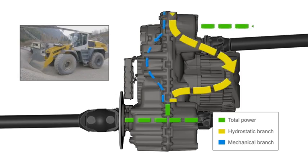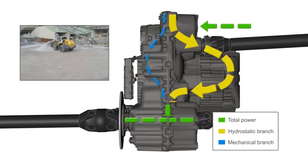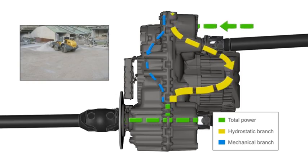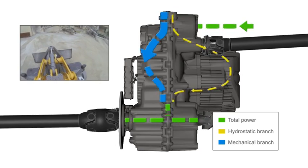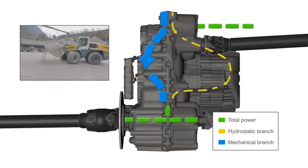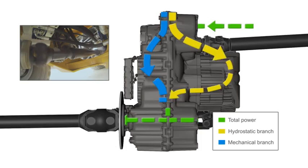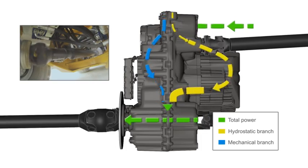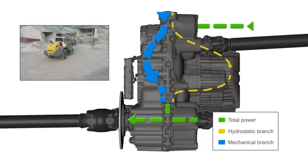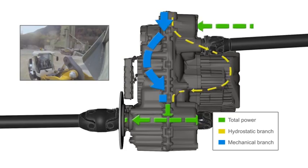During operation, the ratio between the two branches is variably adjusted to the specific situation. There is a higher hydrostatic portion when starting and loading, and a higher mechanical portion at higher speeds. This is depicted here by the thickness of the respective branch.